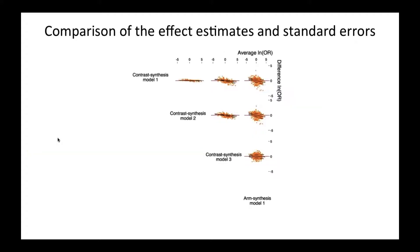Now we'll go through some of the preliminary results. First looking at the log odds ratios, we have here the Bland-Altman plots comparing each of the models. On the y-axis we have the difference in the log odds ratios, and on the x-axis we have the average of the log odds ratios.